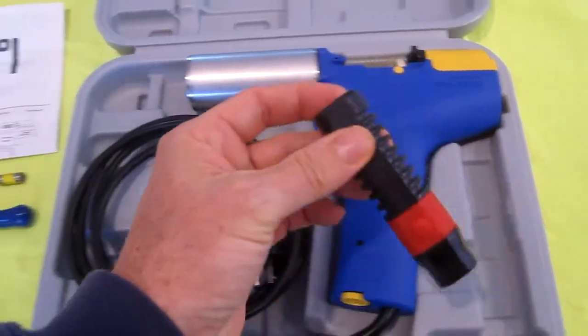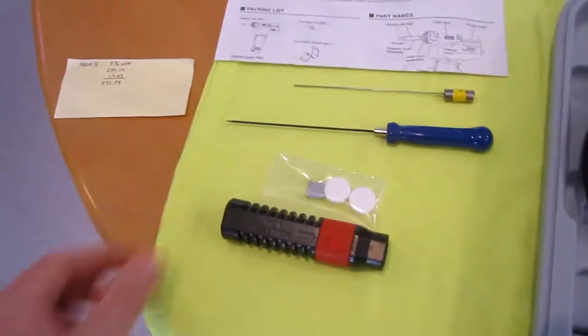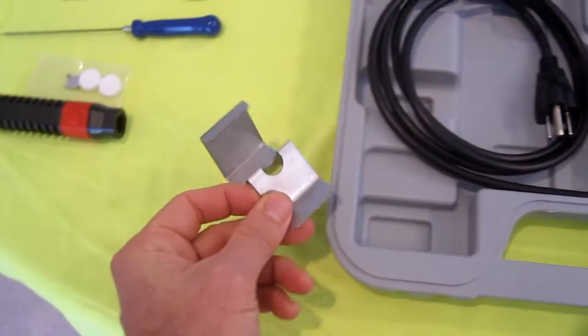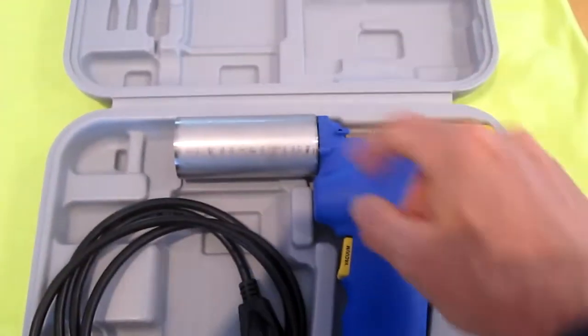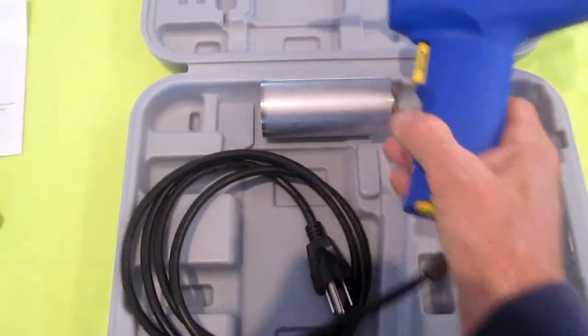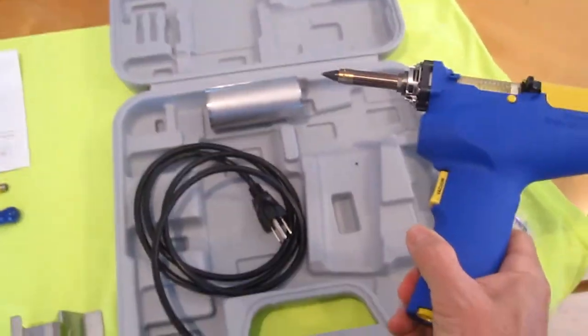This is the tip removing tool, this is the stand, and this metal cylinder is to protect the case when you put the tool in there when it's hot.